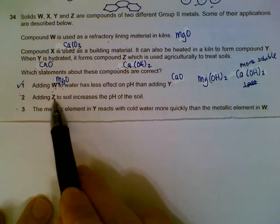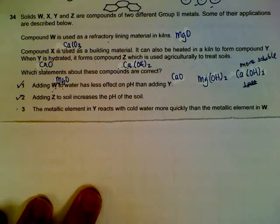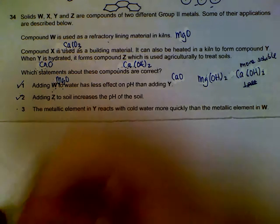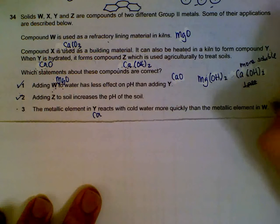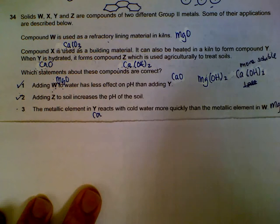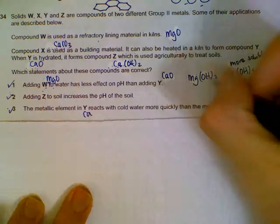And as discussed, calcium hydroxide increases the pH of soil. It solves the problem of acidic soil, so statement 2 is correct. Metallic element in Y, calcium, reacts with cold water more quickly than W, which is correct because calcium is more reactive than magnesium. So all three statements are correct.